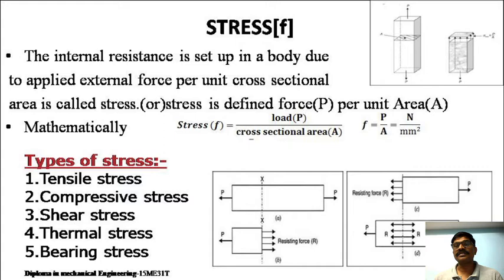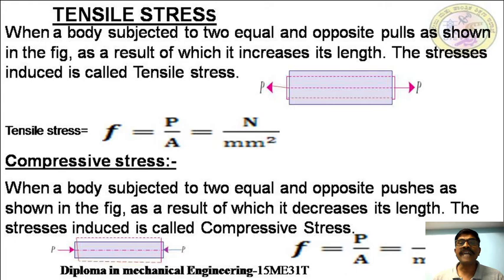Types of stresses: tensile stress, compressive stress, shear stress, thermal stress, and bearing stress. Tensile stress: when a body is subjected to two opposite pulls, as a result of which it increases its length, the stress induced is called tensile stress. F = P / A; units are N/mm² or N/m². Compressive stress: when a body is subjected to two equal and opposite pushes, as a result of which it decreases its length, the stress induced is called compressive stress. F = P / A = N/mm².